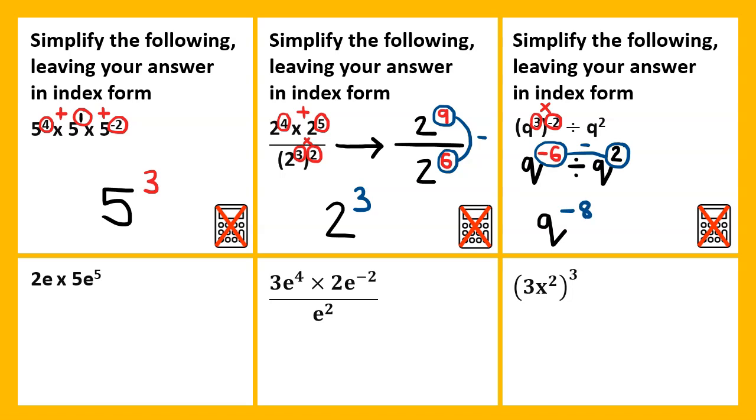The next questions involve a coefficient of the terms or the variables more than 1. These can be split up and done separately, so we can focus on the coefficients and do 2 multiplied by 5, which is 10. And then we can apply the rules just as we've done before with the same base numbers. So the base number is E, and we have 1 plus 5 which is 6, so 10E to the power of 6.